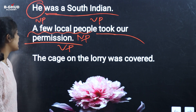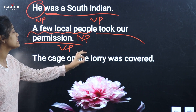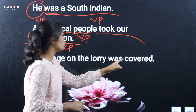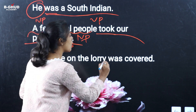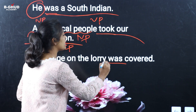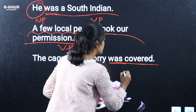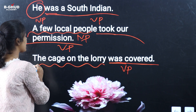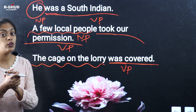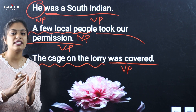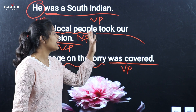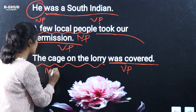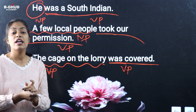Last example: 'The case on the lorry was covered.' The verb here includes the auxiliary verb 'was,' so 'was covered' is the verb phrase. 'The case on the lorry' is the noun phrase. So we identify the noun phrase and we identify the verb phrase using this technique.